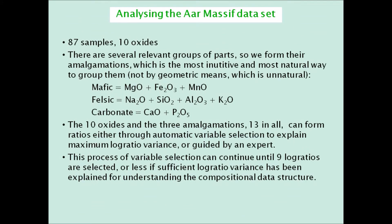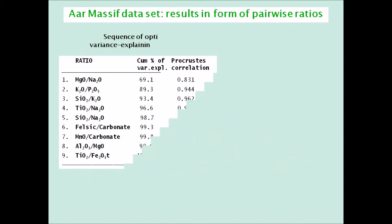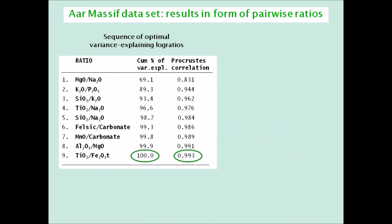To close, here is an alternative way to analyze compositional data using expert knowledge in the groupings of parts. The R-Massif dataset has 10 parts, and a geologically meaningful way of grouping most of them into non-overlapping groups is into so-called mafic, felsic, and carbonate groups. A stepwise selection process of all possible log ratios, including those with the three amalgamations, is conducted to obtain a set of at most nine log ratios. It could also be less than nine if an acceptably high percentage of variance is achieved, and the stepwise selection can be guided by experts' geochemical knowledge. The set explains 100% — actually 99.99% — of the log ratio variance, so its lack of optimality compared to ILRs is only 0.01%. The Procrustes correlation is 0.993. Just four log ratios have explained more than 95% of the variance.